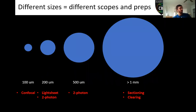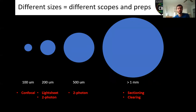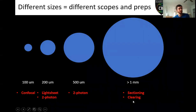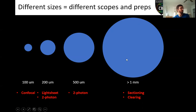Organoids and spheroids can come in many, many different sizes — on the order of 100 micrometers all the way up to multiple millimeters. Depending on where we are in that spectrum, that's going to dictate what type of technology we use on the imaging side as well as what we'll have to do on the sample prep side. I want to walk through each of these situations, starting with something small and working up to really big organoids, talking about which microscopes are best suited to each. We'll also talk about sample prep techniques like sectioning and clearing.